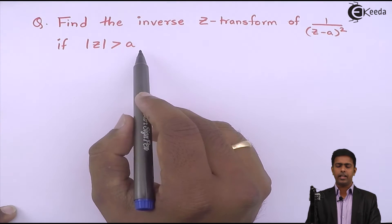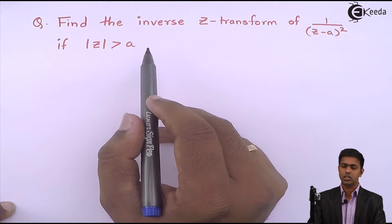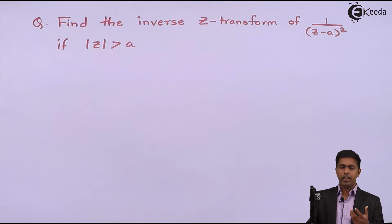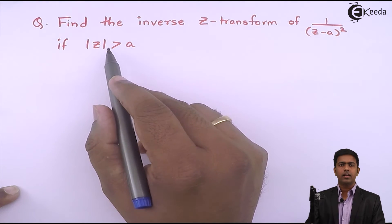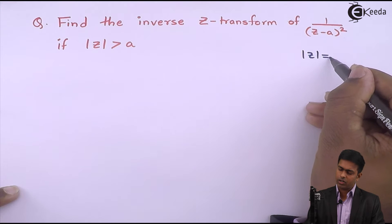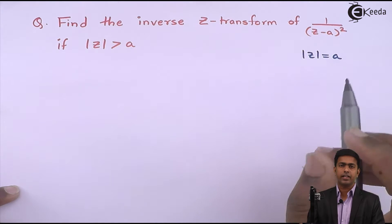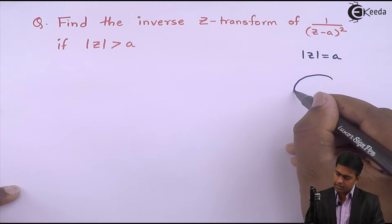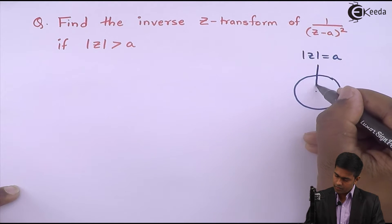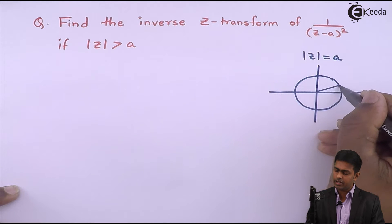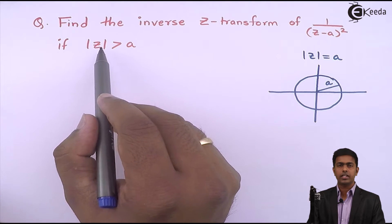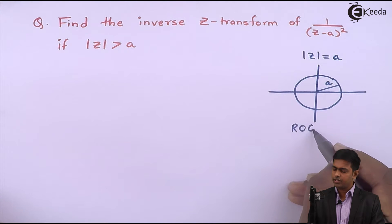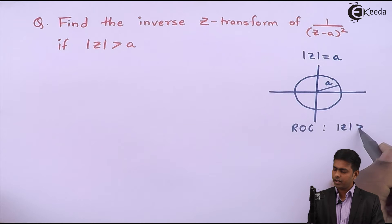Now, what is this mod Z greater than A? This is nothing but the region of convergence — the region where our Z transform exists or is convergent. Let us draw this region of convergence first. Mod Z equal to A is a circle with center at origin and radius equal to A. The region of convergence is mod Z greater than A.